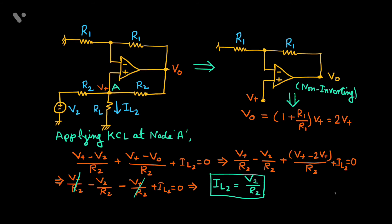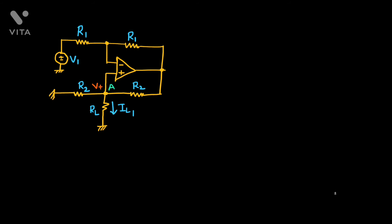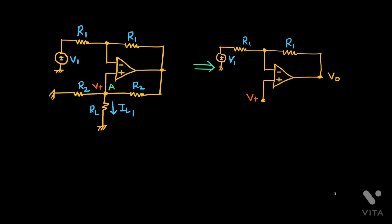Next, when the source V1 is connected to the inverting terminal, we again consider node A with potential V+ and output potential V0. This time the non-inverting terminal is grounded. We can use superposition principle: when V1 acts alone, V+ is grounded, and it acts as an inverting amplifier. When V+ acts alone, V1 is grounded, and the circuit works as a non-inverting amplifier.